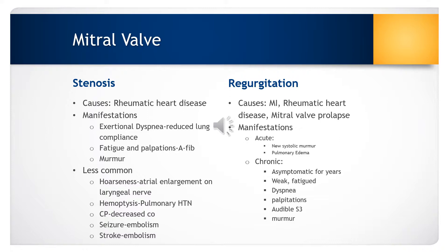The left ventricle and left atrium are both working harder to preserve adequate cardiac output. Oftentimes a person with mitral valve regurgitation doesn't have acute signs and symptoms — it will be more chronic. They're usually asymptomatic for many years, but by the time they come into the hospital, they're very weak and fatigued. They may have shortness of breath, palpitations, an audible S3 heart sound, and an audible murmur.